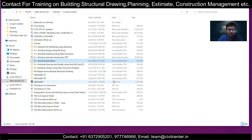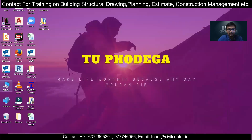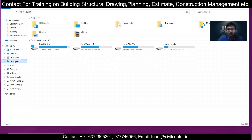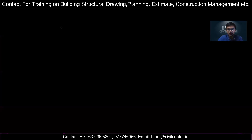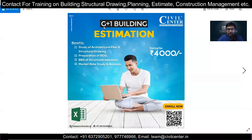We are very transparent about pricing. The G Plus One Building Estimation course fee is rupees 4,000, covering all these topics. The next batch starts from next week, and every month we run two batches. If you are watching this video, you can enroll yourself using the link given in the description.